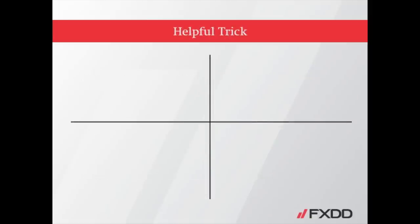A trick is to draw a set of perpendicular lines on a piece of paper — the horizontal one will represent the current market price. If you draw a BL and then an SS in the bottom boxes, it spells BLIS. If you remember that BLIS is on the bottom, then you should have no problem figuring out which pending order to place in a given situation.